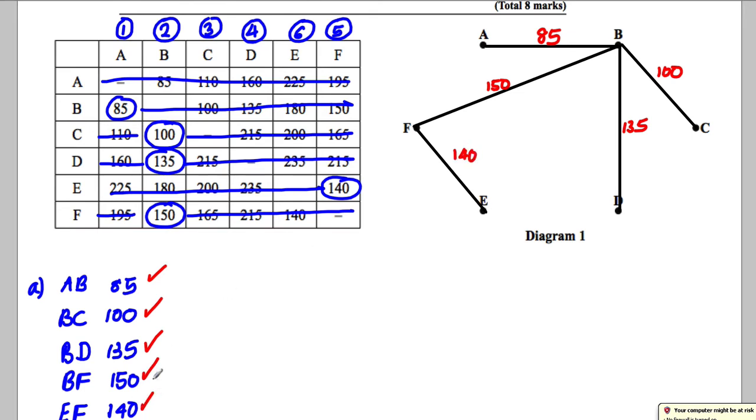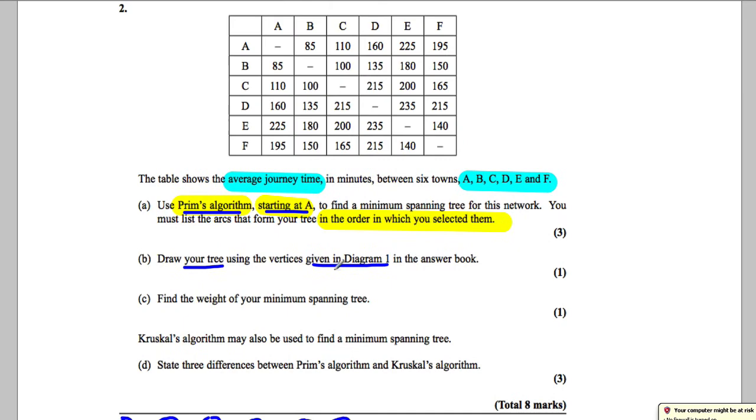You know you've done it when if there are one, two, three, four, five, six nodes, there will always be five connectors in the minimum spanning tree. And there's one, two, three, four, five indeed. Okay, so we've done the first two parts.